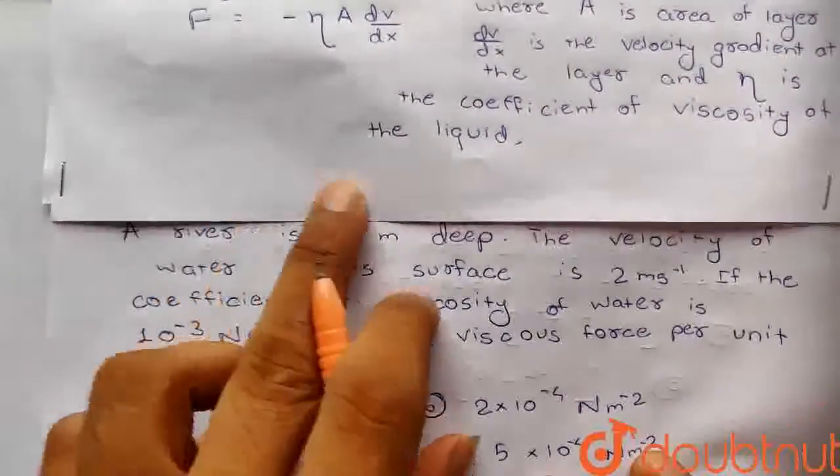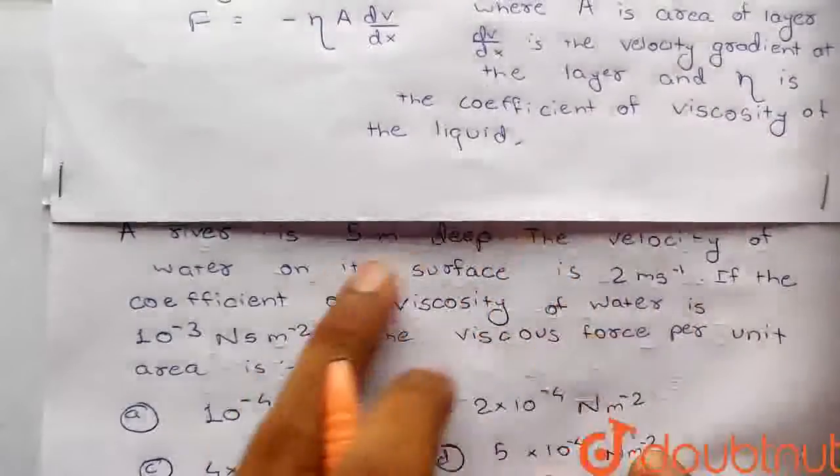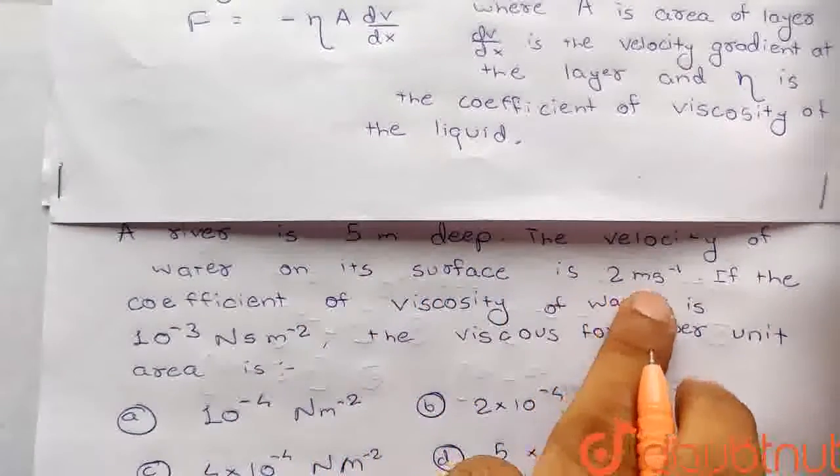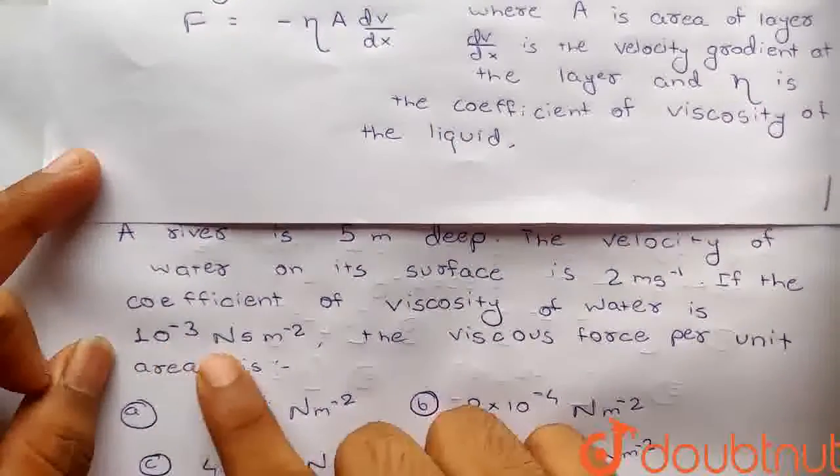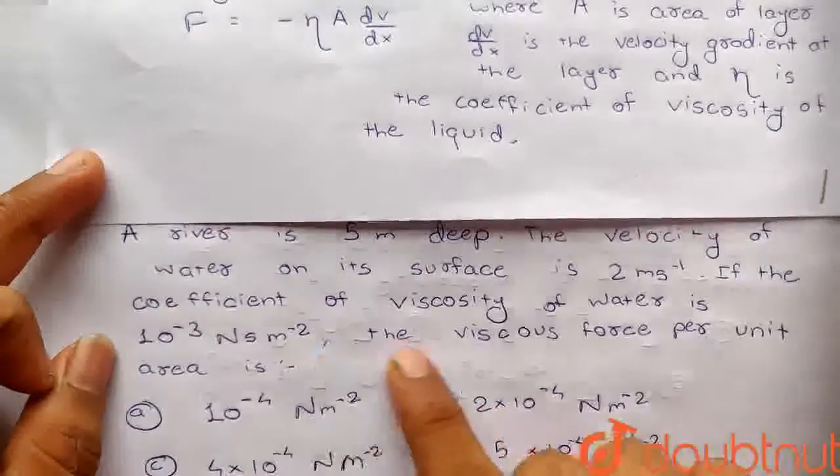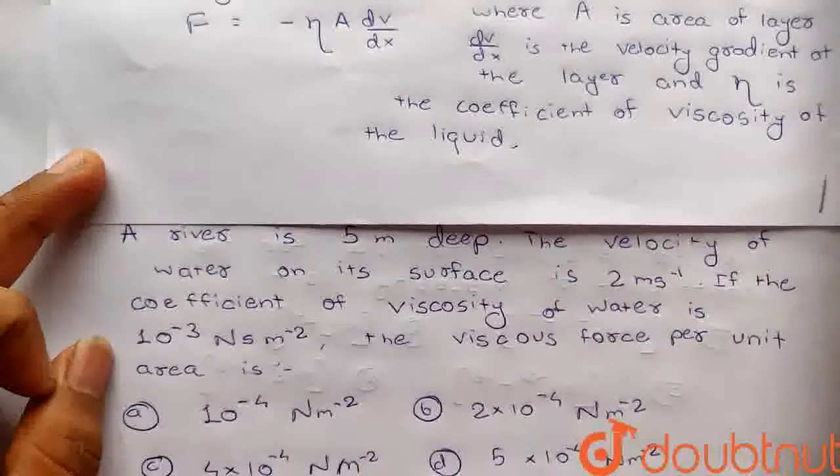Now, a river is 5 meters deep. The velocity of water on the surface is 2 meters per second. If the coefficient of viscosity of water is 10 raised to power minus 3 newton second per meter squared, find the viscous force per unit area.